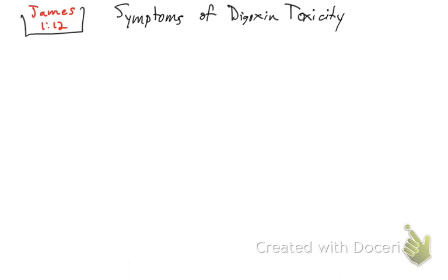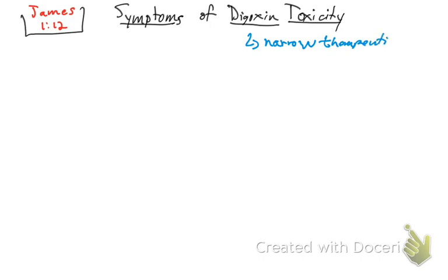Now let's talk a little bit about digoxin and the symptoms that cause toxicity. So digoxin is used when the patient has a problem with their heart. It also has a narrow therapeutic index, which makes this drug more susceptible to toxicity.